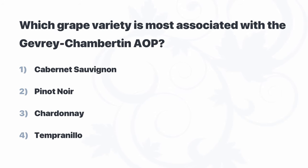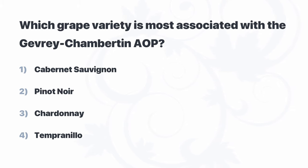Which grape variety is most associated with the Gevrey-Chambertin AOP? Cabernet Sauvignon, Pinot Noir, Chardonnay, or Tempranillo? Our success with this question comes down to whether we recognize Gevrey-Chambertin. It's a French name, so we can set aside Tempranillo. But that leaves three options: we're either in Bordeaux with Cabernet Sauvignon, or in Burgundy with Pinot Noir or Chardonnay.